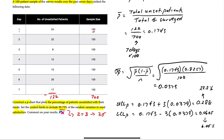The next step is to create the control chart, but first let's determine the proportion of unsatisfied patients each day. Since the sample size is 100, we simply divide by 100. Day one: 24 divided by 100 gives a proportion of 0.24, or 24 percent. Then we have 0.22, 0.08, 0.15, 0.10, 0.26, and 0.17.